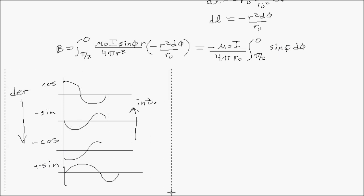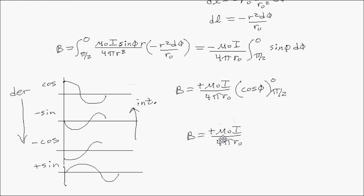So B equals all of the junk out here. The antiderivative is negative cosine, but I'm going to take that negative out, so it's cosine of phi evaluated from pi over 2 to 0. Evaluating this, final cosine of 0 is 1 minus the initial cosine of 90 degrees is 0.